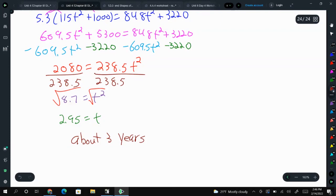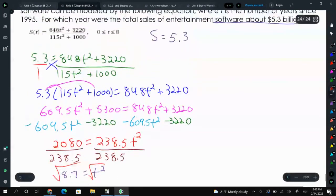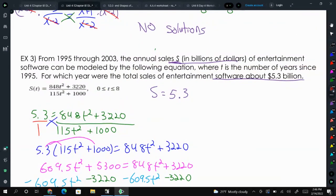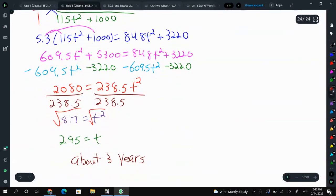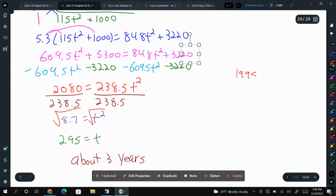Now the problem says in what year will it happen, not how long will it take for which year. So we know that it is going to take about 3 years. But since we started in 1995, we need to add 3 to that. So the actual year is going to be 1998.